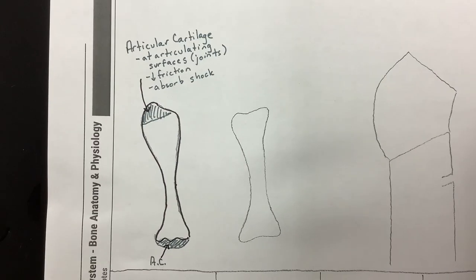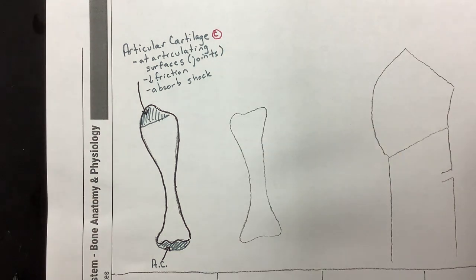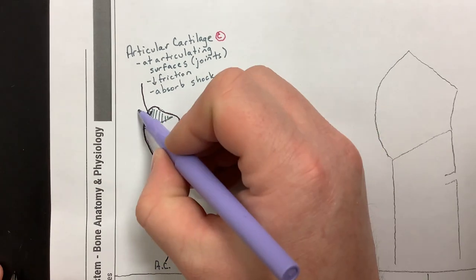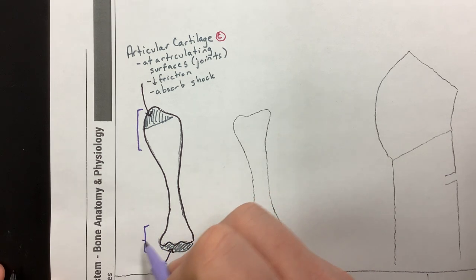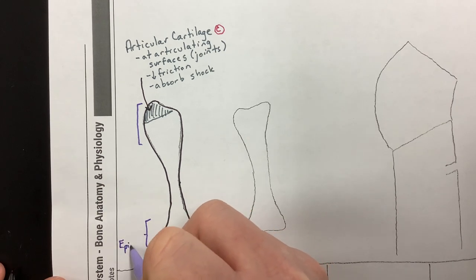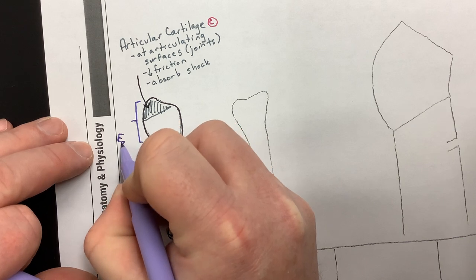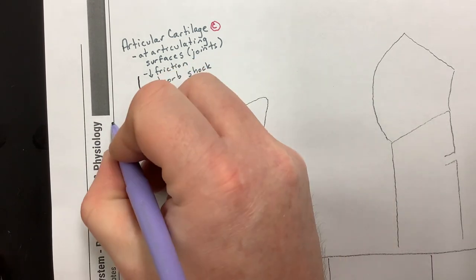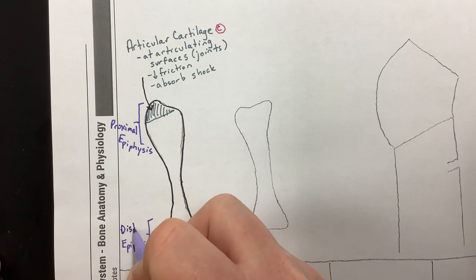Articular cartilage is an example of connective tissue. Now, each region of the bone has a different name. If this is your arm bone, the part attached to your shoulder would be the end of the bone — called an epiphysis. The end closer to the body is the proximal epiphysis, and the other end further from the body is the distal epiphysis.